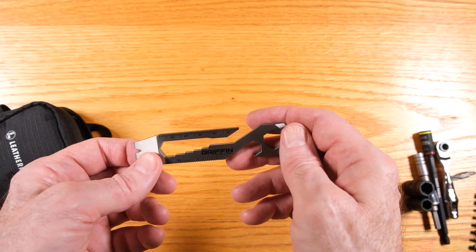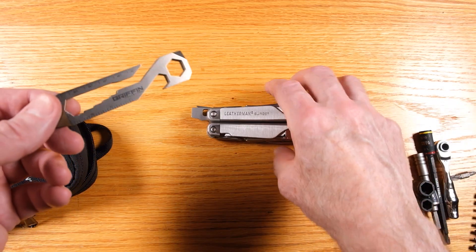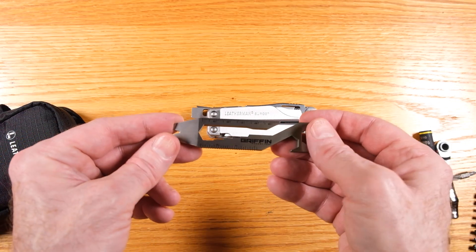And this also, the Leatherman tool, some of the Leatherman tools will have a scale on the side for measuring things. This one doesn't, this does.